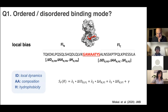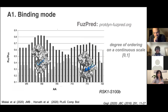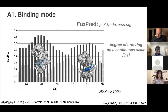Q1: is it ordered or disordered? You need to look for the local bias that drives ordering—not absolute quantities but differences—looking at local dynamics, composition, and hydrophobicity. This gives a prediction of the degree of ordering on a continuous scale between 0 and 1. Using the example of RSK1, you see two binding sites: one is more ordered than the other. Interestingly, it's not the regular helical structure that is more ordered; there must be a linker in between. We talk about the degree of ordering here.